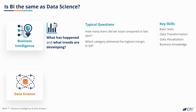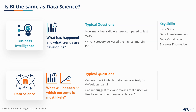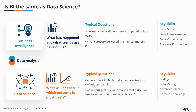Data science, on the other hand, focuses on what will happen or which outcome is most likely. Questions answered with data science include: can we predict which customers are likely to default on loans? Or can we suggest relevant movies that a user will like based on their previous choices? The skills used in data science are more technical and include coding, data mining, advanced statistics, and specific domain knowledge. More generally, the term data analysis brings together concepts and skills from both of these areas.